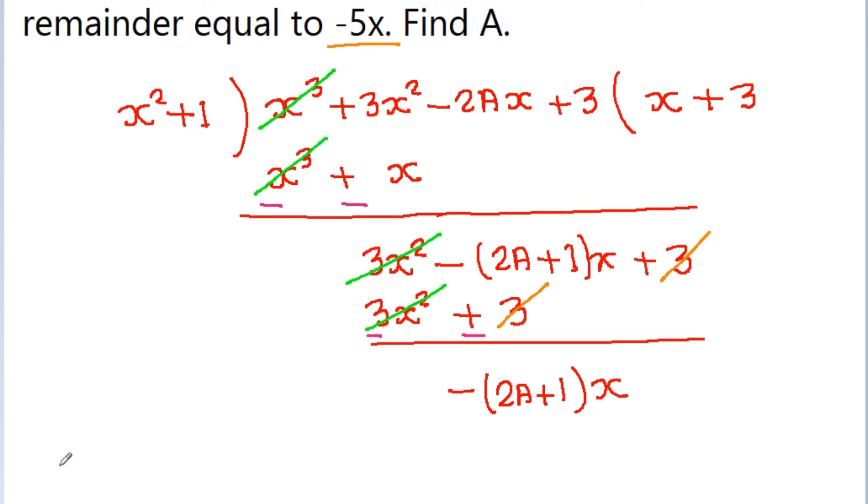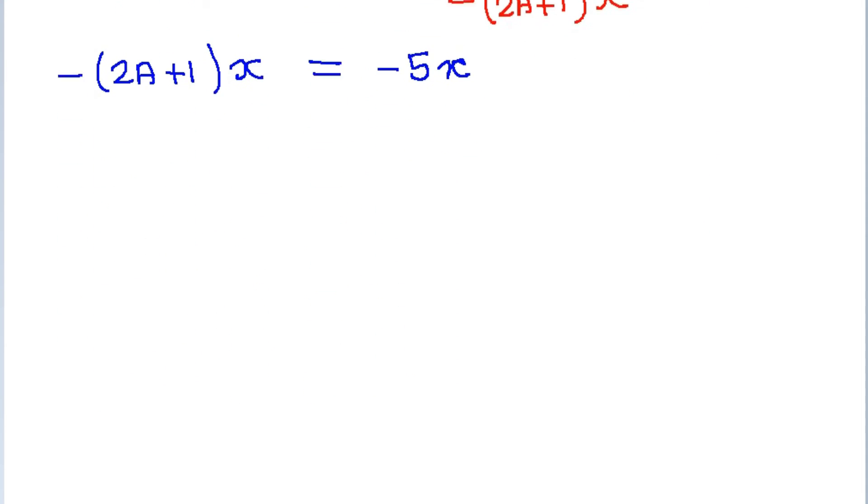So here minus 2A plus 1 times x must be equal to minus 5x. And now, here minus and minus will be cancelled, and x and x will be cancelled.